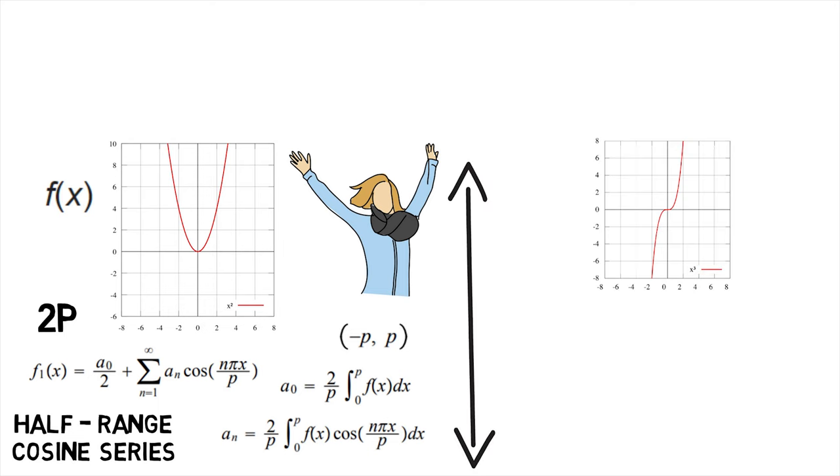Similarly, for an odd function with the same open interval of minus p to p, the Fourier series f2 of x is given by summation of b_n into sin of n pi x upon p from n equals 1 to infinity.